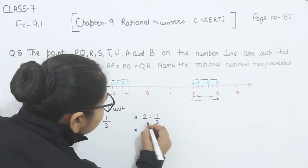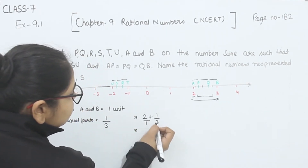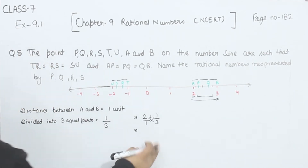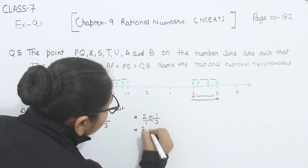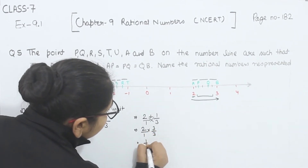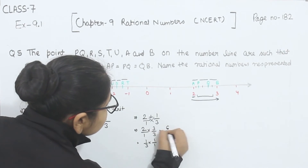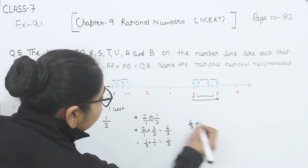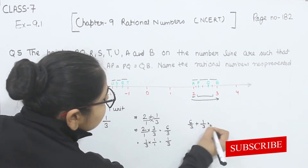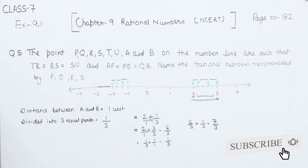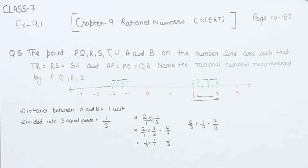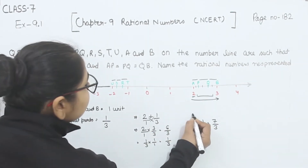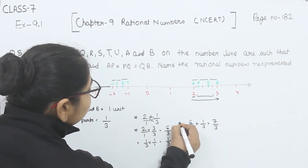Now denominators are not the same, so first of all we are going to multiply numerator and denominator by each other's denominator. So this is 2/1 multiplied by 3, and this one is 1/3 multiplied by 1. So this gives 6/3 plus 1/3, which becomes 7/3. So we have the value 7/3 — this is the value of point P.